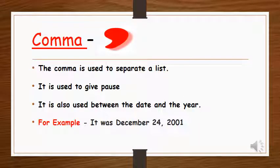Our next punctuation mark is comma. Comma is used to separate a list, it is used to give pause, it is also used between the date and the year. For example, it was December 24th, comma, 2001. When there is a comma, you give a little pause in that moment. Just imagine students, if there is no comma between 24 and 2001, will it make a sensible sentence? No.